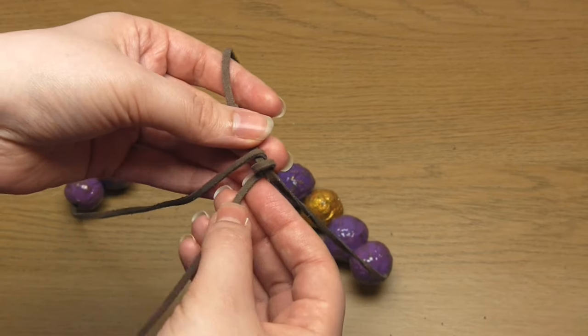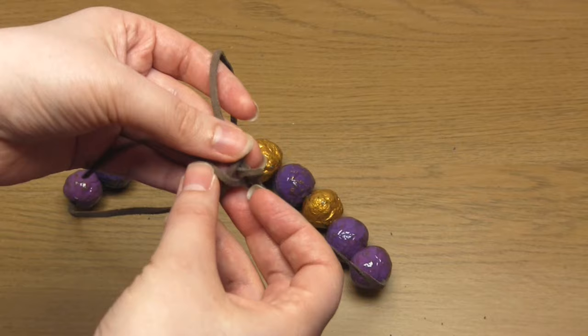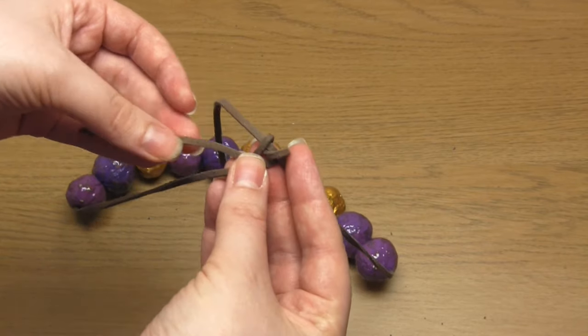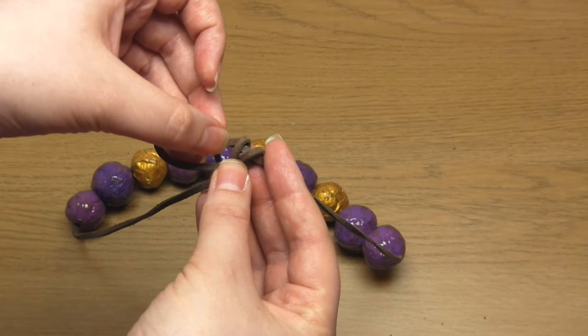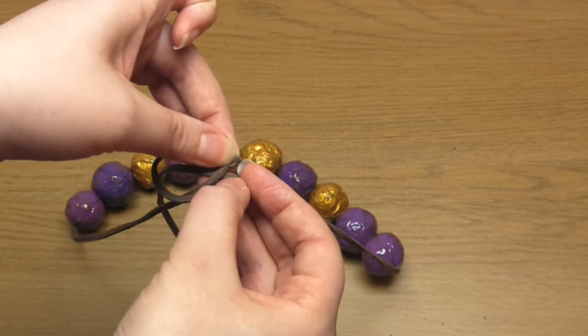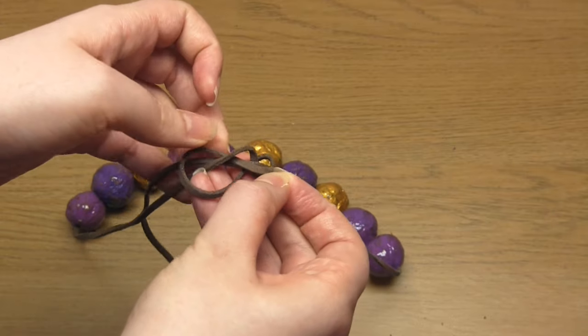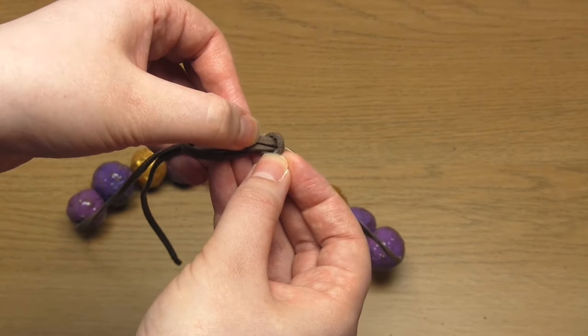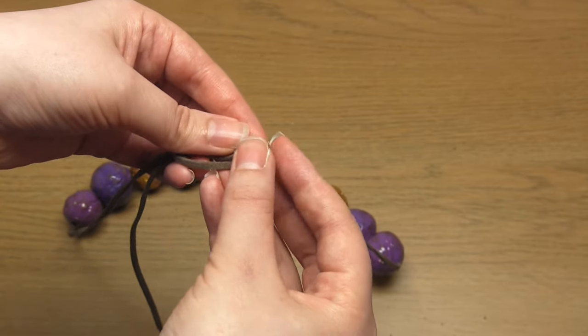Then take this cord back over the left strand. Then feed it through the two loops that you've just made going from left to right. Then pull tight.